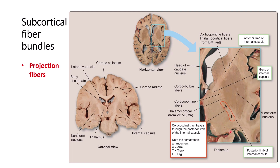The corticospinal tracts are also located in the posterior limb of the internal capsule — you may remember this from chapter seven. This is the conscious tract important for movement of the limbs and torso, with the arm, trunk, and limb fibers located in different areas within the posterior limb.